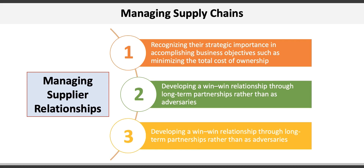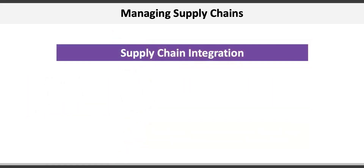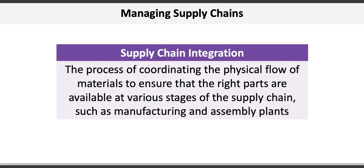Another element of supply chain management includes supply and value chain integration. Supply chain integration is the process of coordinating the physical flow of materials to ensure the right parts are available at the right stages of the supply chain, such as manufacturing and assembly plants. A non-manufacturing example is Walmart, which very tightly controls the supply chain from suppliers all the way through its own distribution network to individual stores.